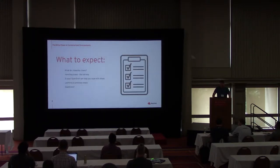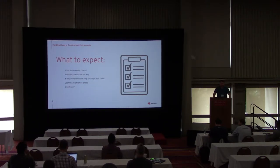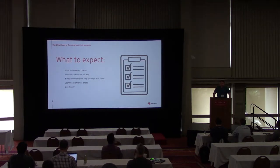To dive in — what we're going to be talking about today: first, what do I mean by chaos? Then, how we would have handled that chaos in more traditional non-containerized environments. Then I'll talk about how OpenShift can help you cope with this chaos, including three hands-on demos and two other ways I won't be able to demo. Finally, I'll make some recommendations on ways to build cultures and teams that plan for and manage chaos, with time at the end for questions.